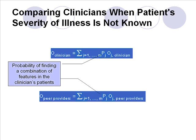When severity indices are not available, the analysis is modified so that we calculate the expected outcomes for the clinician and the peer providers using feature-by-feature matching of the patients. This is done by replacing the probabilities with the probability of finding a particular combination of features in the clinician's patients. The same probabilities are used to calculate the expected outcome for both the clinician and the peer providers, so we calculate the expectations for the types of patients showing up in the clinician's practice.